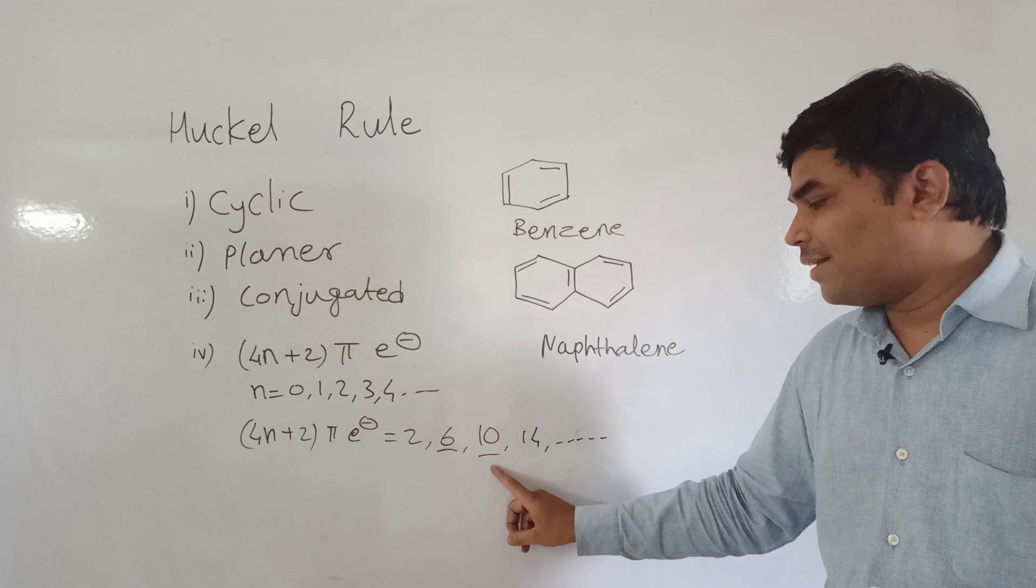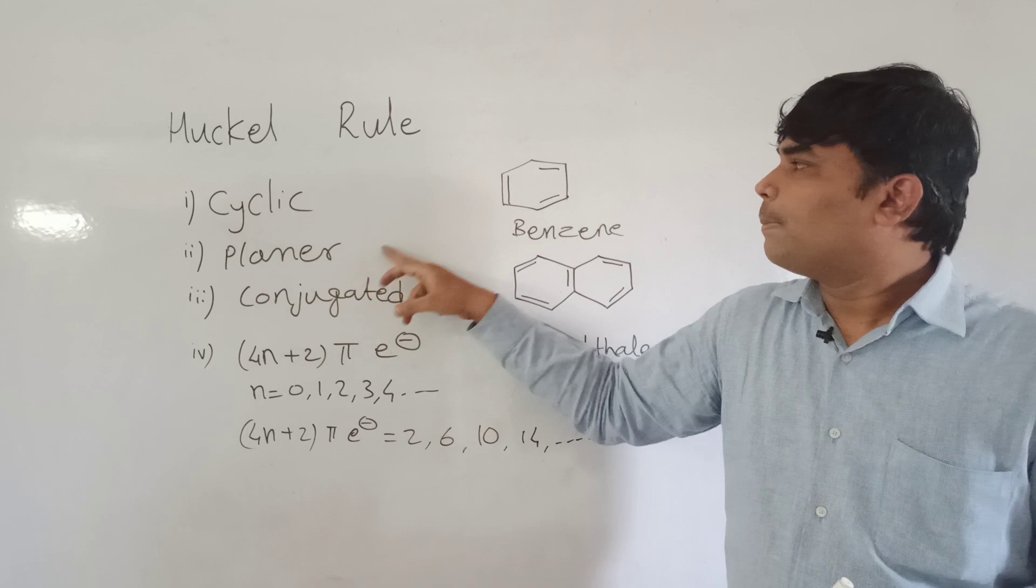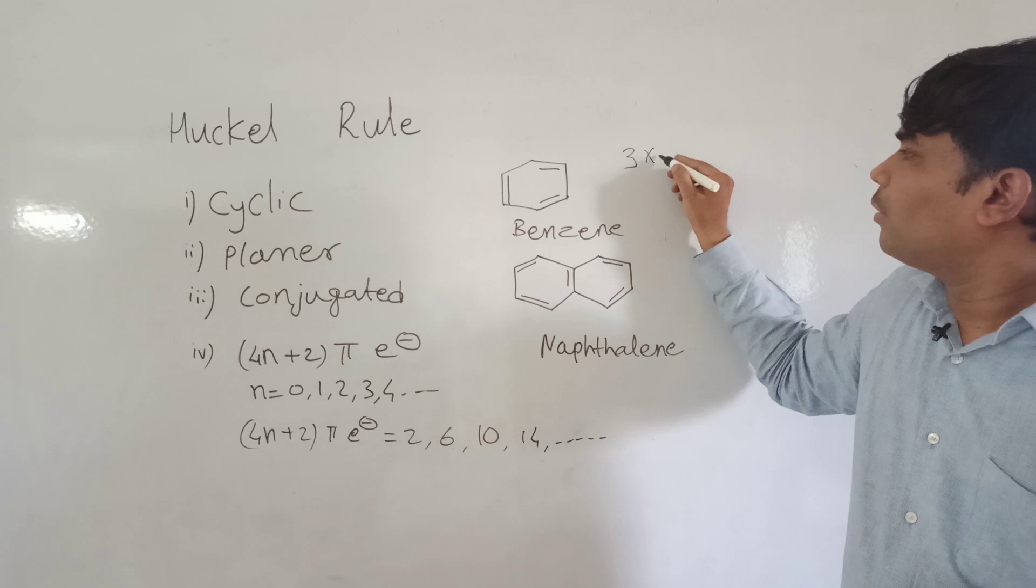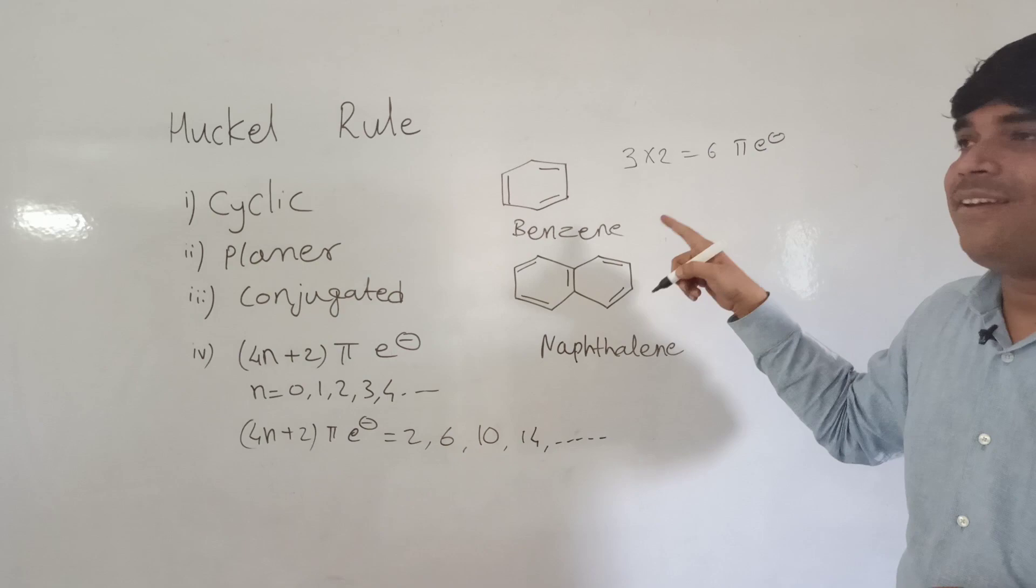Benzene is cyclic, planar, conjugated, with alternating double and single bonds here, and contains how many electrons? There are three double bonds: one, two, three. Therefore, three into two equals six pi electrons in the benzene ring. In benzene ring, there are six pi electrons. Therefore, it obeys all the conditions. Hence, benzene is aromatic.